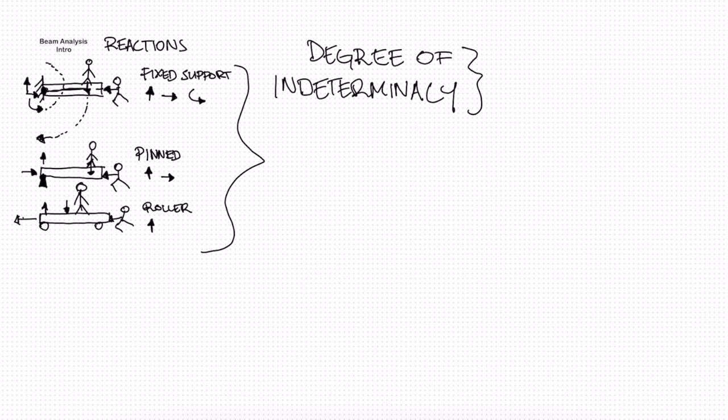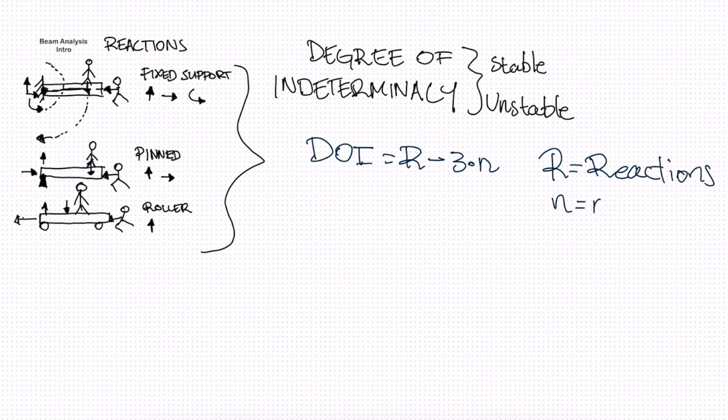So all this is, is a fancy way of saying whether the beam is stable or unstable. So we have a really simple formula, which is degree of indeterminacy is equal to the reactions minus three times n. So r is equal to reactions and n is equal to the number of members.